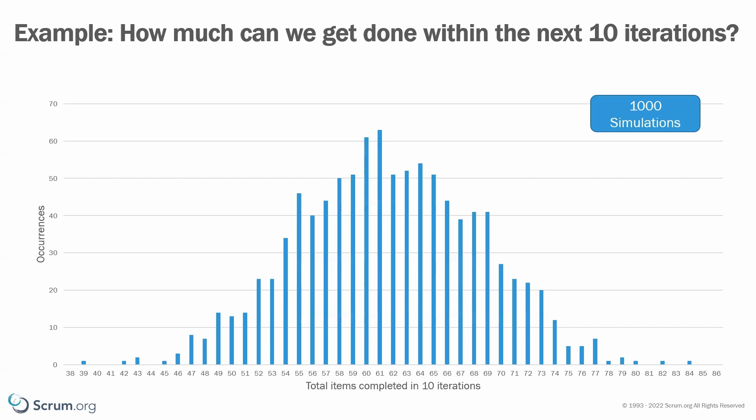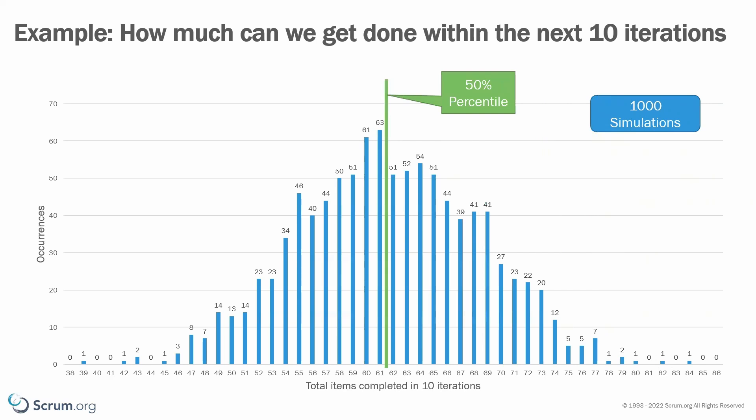Let's find out how many items we might complete with a probability of 50%. To extract this information, we have to find the point in the chart where at least 50% of our simulations ended with that result. With 1,000 simulations, 50% will be 500. We start from the right and accumulate the occurrences until we reach 500. The point on the x-axis where we stop we can read as: there is a 50% chance that we might complete at least that number of items within ten iterations — in our example, this is 62 items.